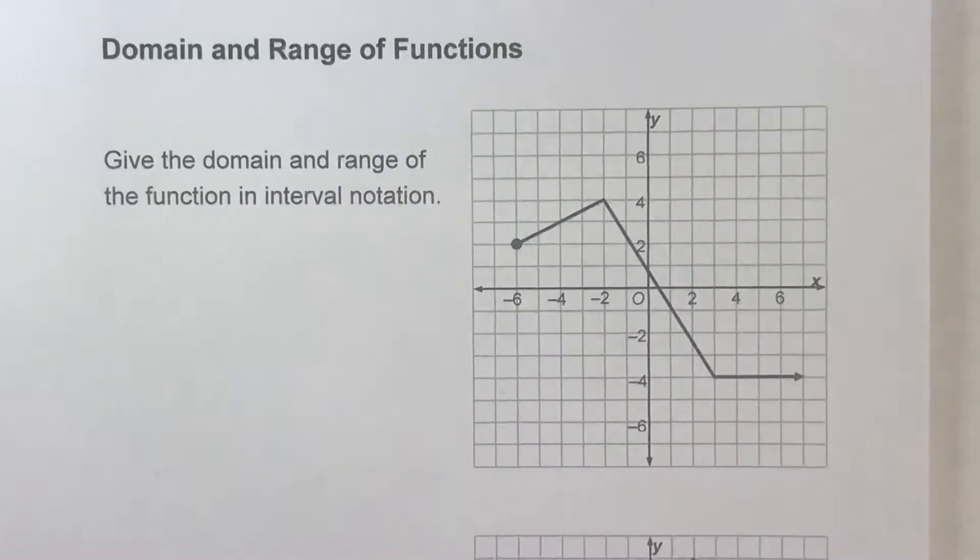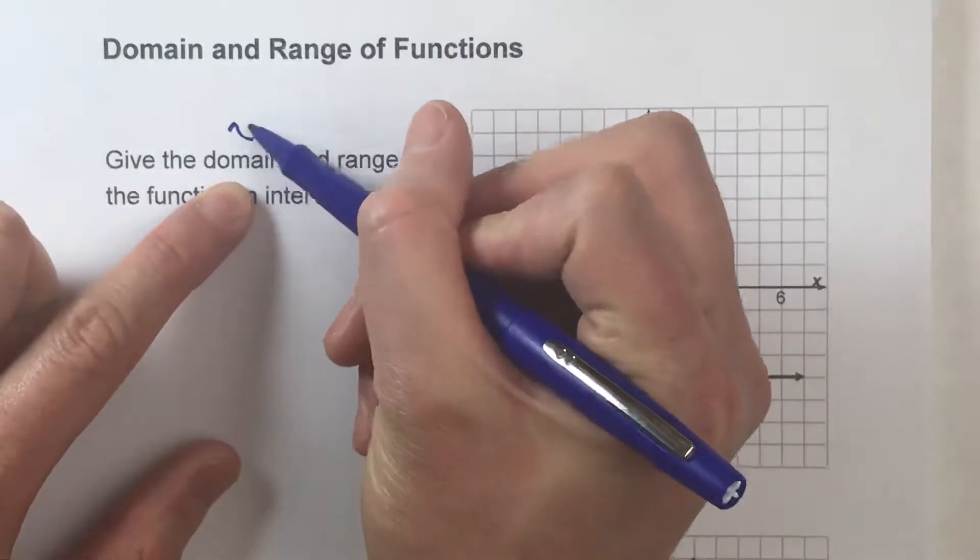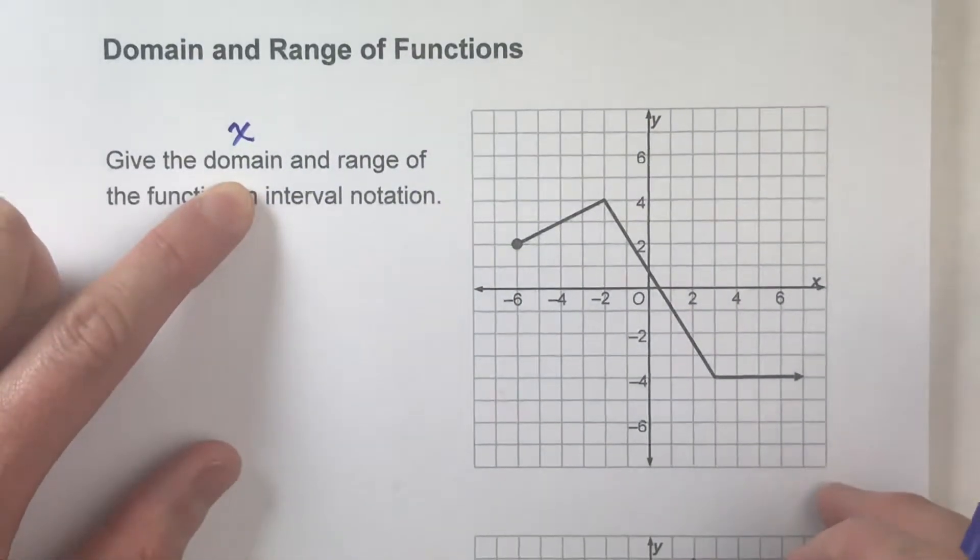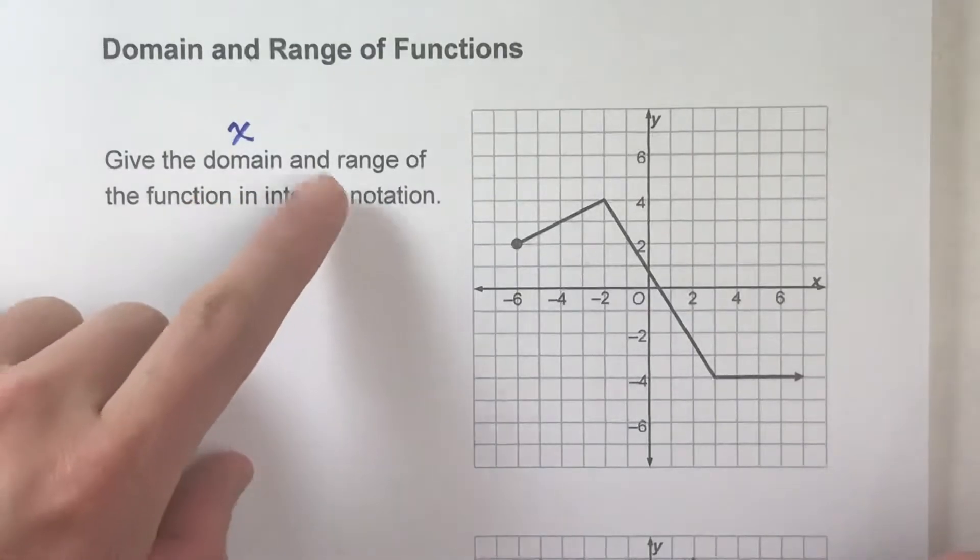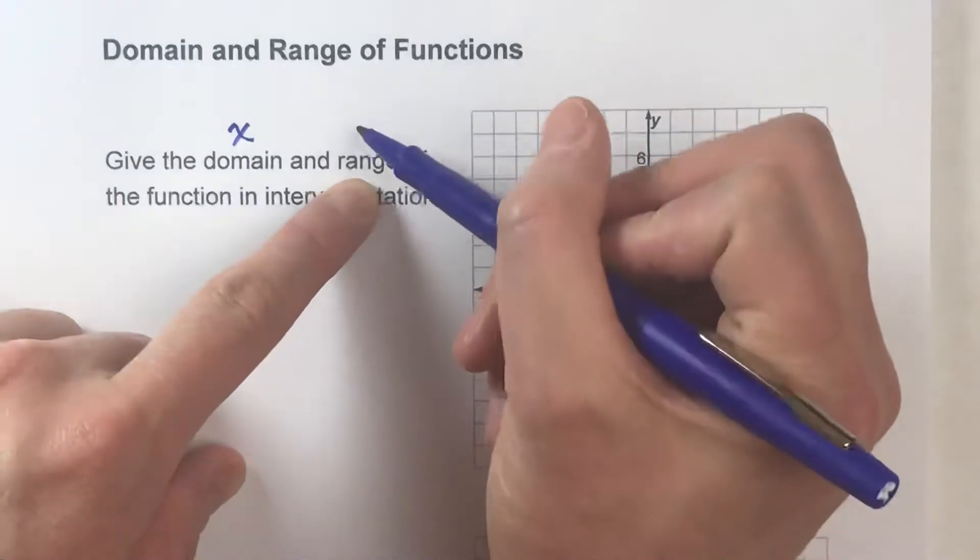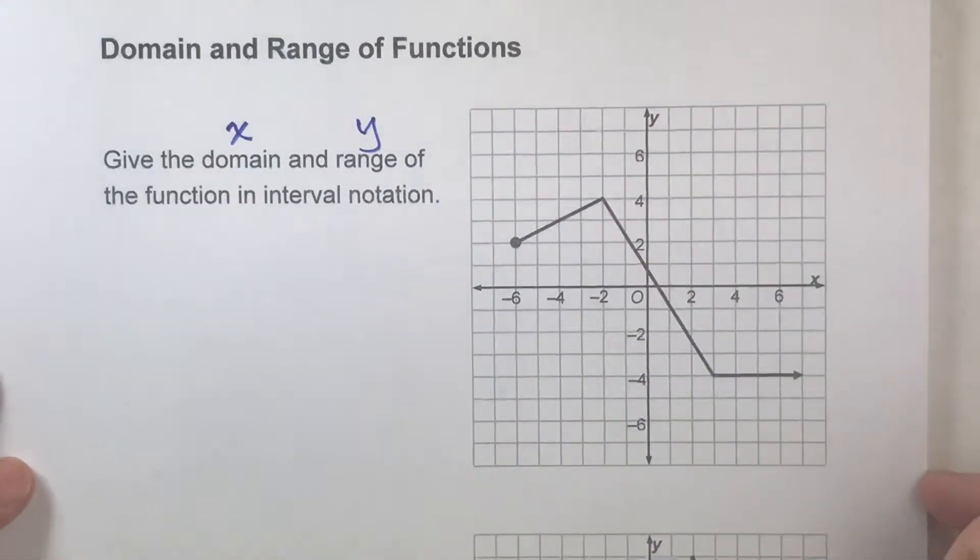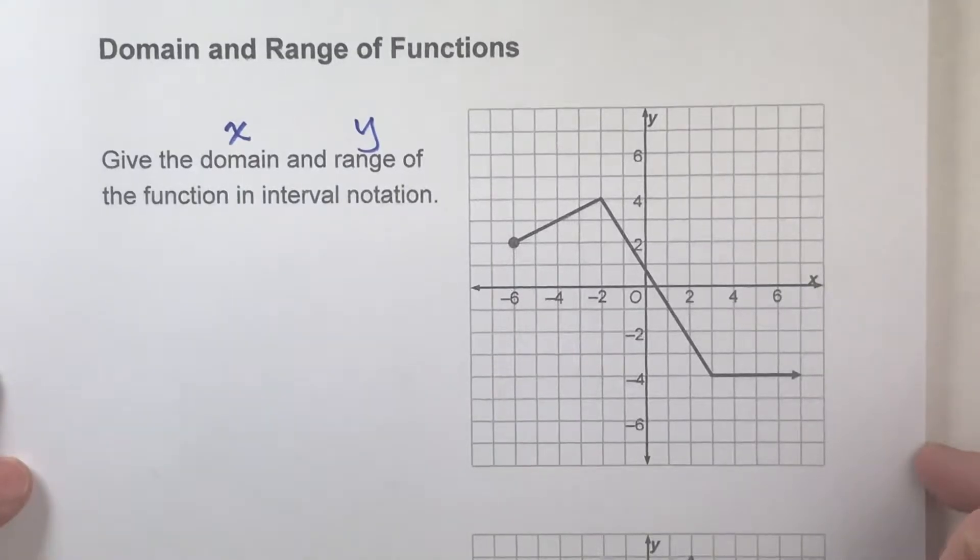Now, the first thing you really need to know is that when we're looking for the domain, we're listing all the possible x values that the function could be. When we are listing the range, we're listing all the possible y values that the function could be. So we have to pay attention to the graph in those terms.